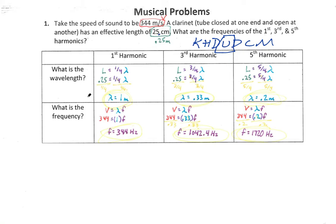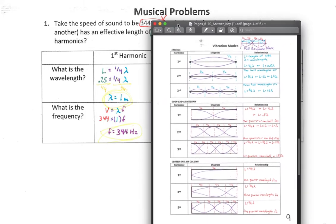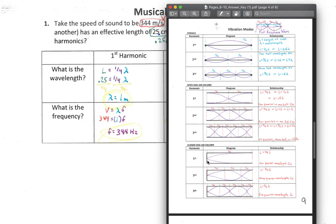Alright, so let's figure out what some of these frequencies are. How I'm getting these formulas of 1 quarter wavelength, 3 quarter wavelength, and 5 quarter wavelength is by comparing it to our chart of vibration modes. So in a clarinet, we know that it is a tube that is closed at one end, open at the other end. So our first harmonic is going to be 1 quarter wavelength will fit inside the length of the tube. We know for a third order harmonic, the length of the tube will fit 3 quarters of a wavelength in it, and for a fifth order harmonic, the length of the tube will fit 5 quarters of a wavelength inside of it. So that's where I'm getting these formulas from.